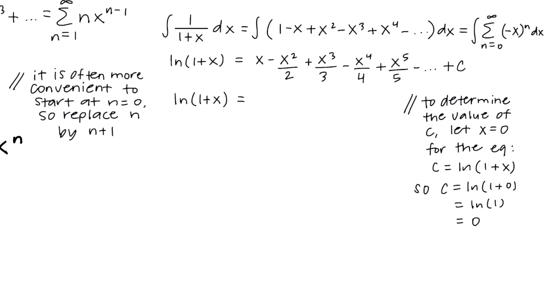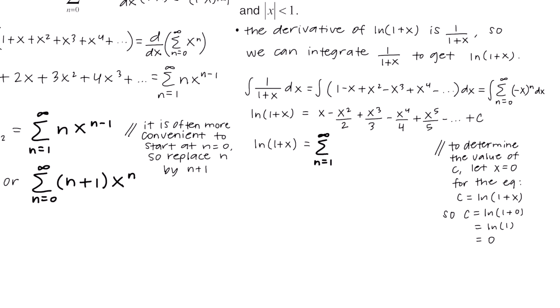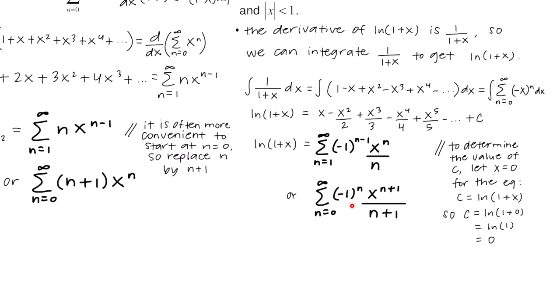Now we rewrite this using sigma notation. The series is alternating with the first term positive, and since n starts at 1 we use negative 1 to the n minus 1. We have x, then x squared over 2, then x cubed over 3, so we write x to the n over n. Alternatively, converting to start at n equals 0, we replace those n's with n plus 1.